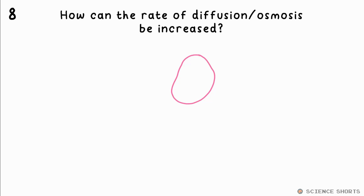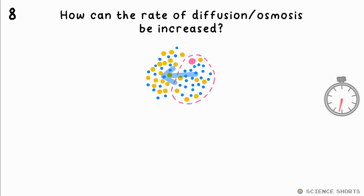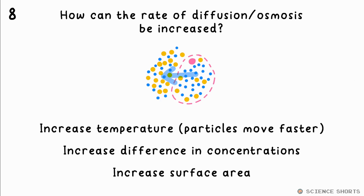Question 8. How can you increase the rate of diffusion or osmosis? You can increase the temperature — that's because particles have more energy, so they move faster. You can increase the difference in concentrations. You can also increase the surface area that diffusion is occurring across.